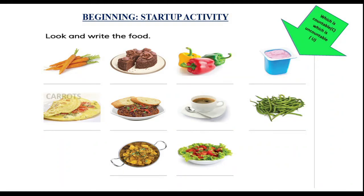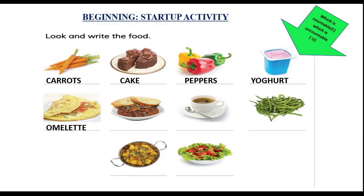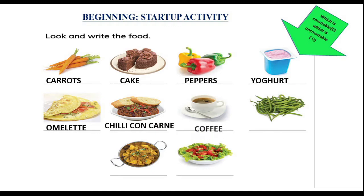One: carrots. Two: cake. Three: peppers. Four: yoghurt. Five: omelette. Six: chili con carne. Seven: coffee. Eight: beans. Nine: curry. Ten: salad.